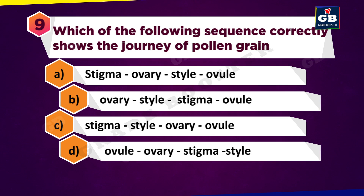Which of the following sequences correctly shows the journey of a pollen grain? A: Stigma, ovary, style, ovule. B: Ovary, style, stigma, ovule. C: Stigma, style, ovary, ovule. D: Ovule, ovary, stigma, style.